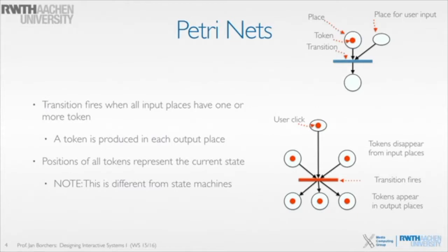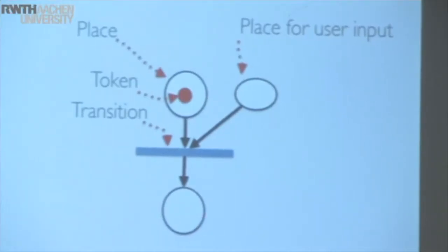A Petri Net has a couple of different components. One thing you have is a place — all the things we used to call states in the STN are now called places. The state of a Petri Net is not just defined by a single active state as in an STN; with Petri Nets it's more complicated.